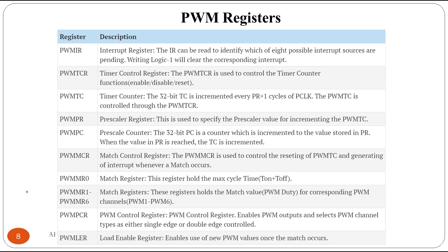For PWM signals in the LPC2148 we have various registers to control and generate different PWM signals. First is PWM IR — the interrupt register. It can be read to identify which of the eight possible interrupt sources are pending; writing logic one will clear the corresponding interrupt. Then we have PWM TCR, the timer control register, and PWM TC, the timer counter, which is incremented every PR+1 cycles of the peripheral clock (PCLK). We also have PWM PR (prescalar register) and PWM PC (prescalar counter) and PWM MCR, the match control register.